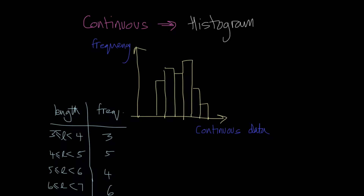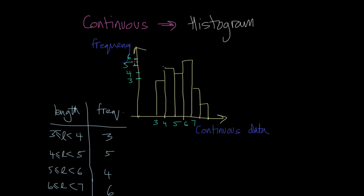When plotting this on the graph, the x-axis shows values three, four, five, six, and seven. Between three and four the frequency is three, between four and five the frequency is five, between five and six the frequency is four, and between six and seven the frequency is six. This is how you plot continuous data. Thank you and see you in the next video.